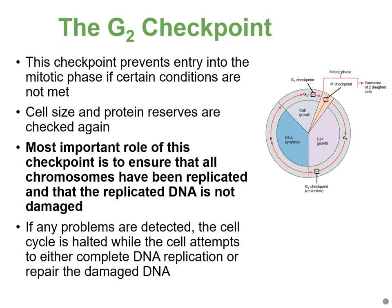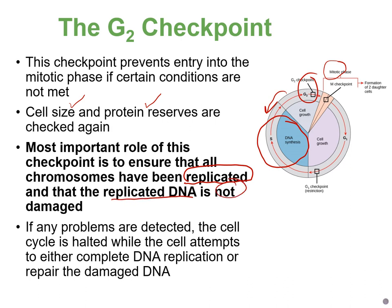The next checkpoint is the G2 checkpoint, at the end of G2 before mitosis can happen. Again, the cell checks that its size is large enough and that there are enough protein and energy reserves. The most important role of this checkpoint is to make sure that during the DNA synthesis phase, all chromosomes were replicated properly and are not damaged. If there are problems, the cell cycle halts to attempt repair. If repair fails, the cell often undergoes apoptosis and is destroyed.